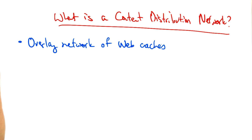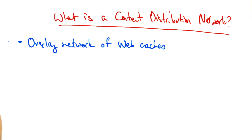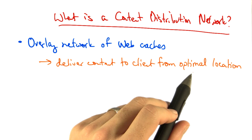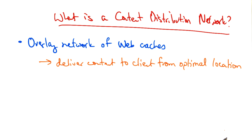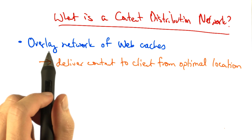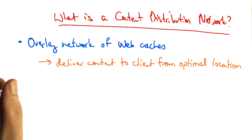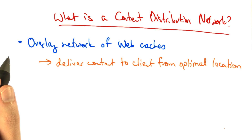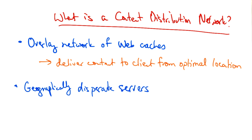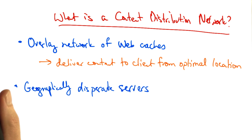It's an overlay network of web caches that's designed to deliver content to a client from the optimal location. In many cases, optimal means geographically closest, but sometimes optimal is not the geographically closest cache, and we'll see some examples of when that's the case. CDNs are made of distinct, geographically disparate groups of servers, where each group can serve all the content on the CDN.